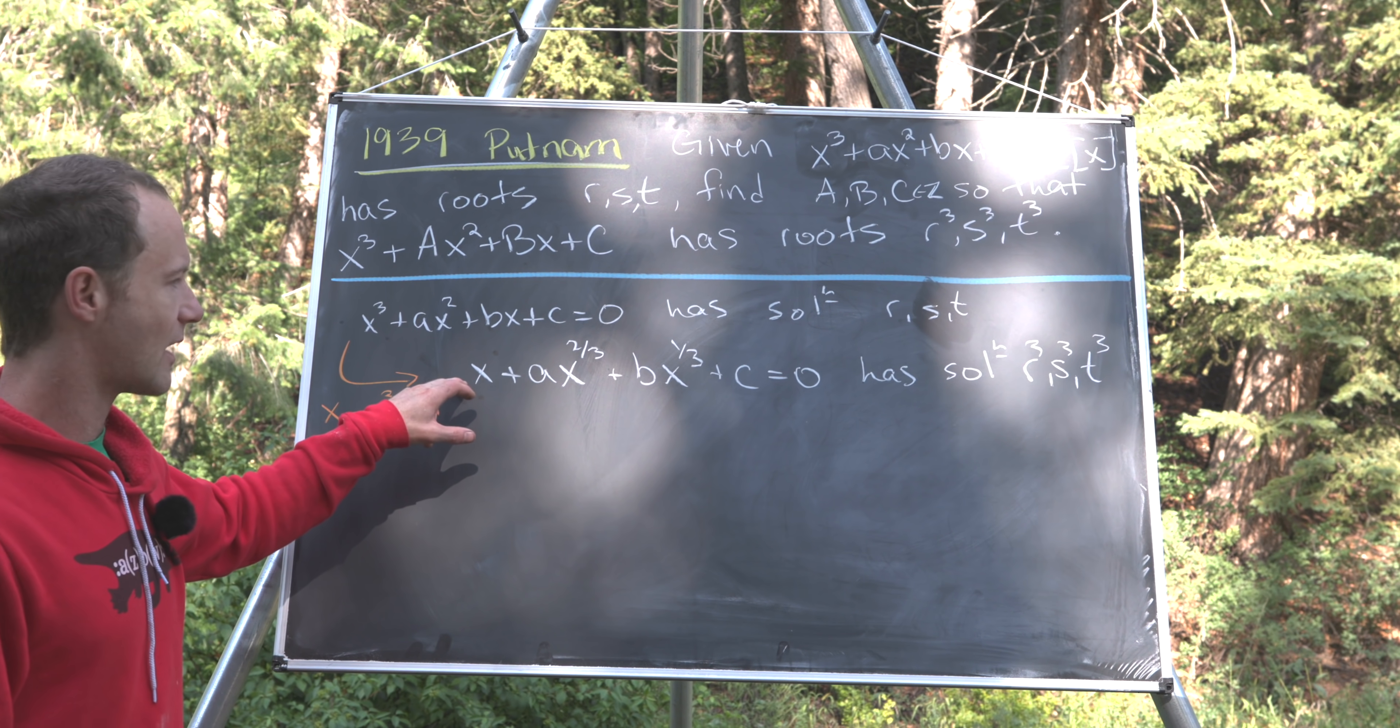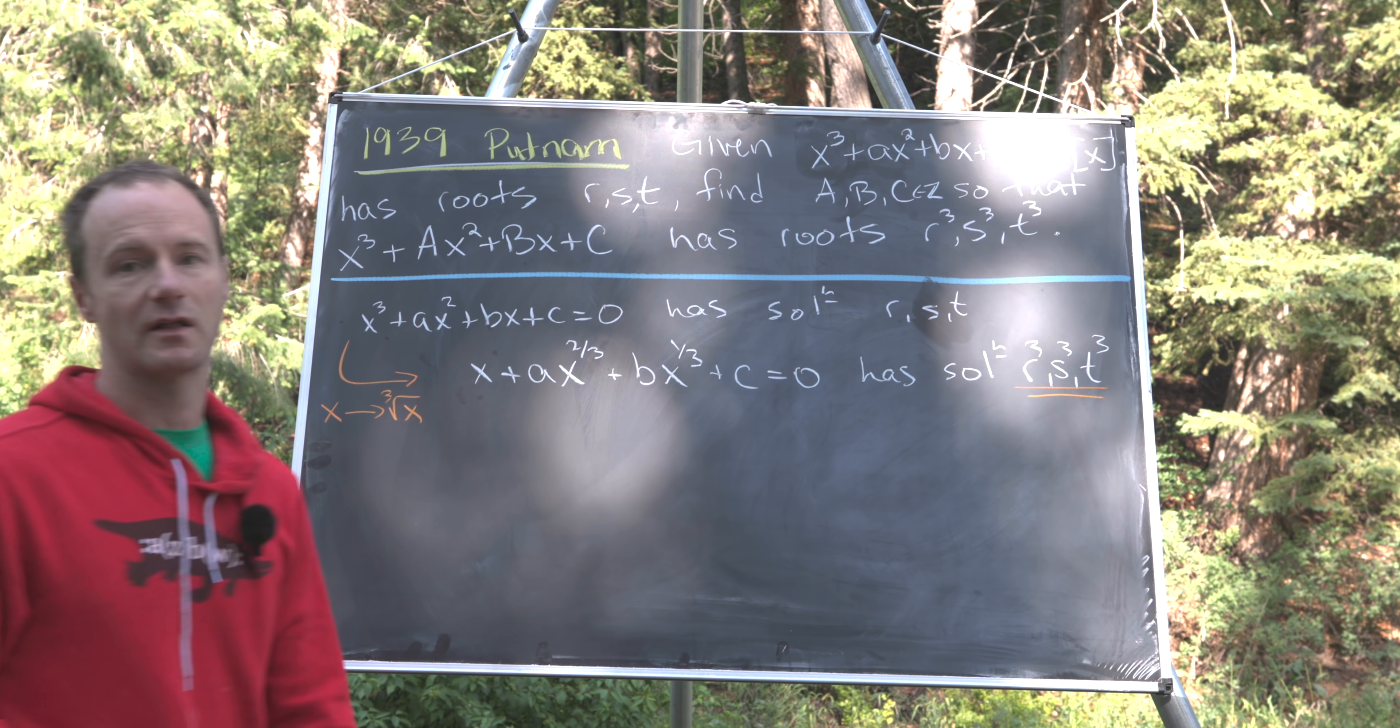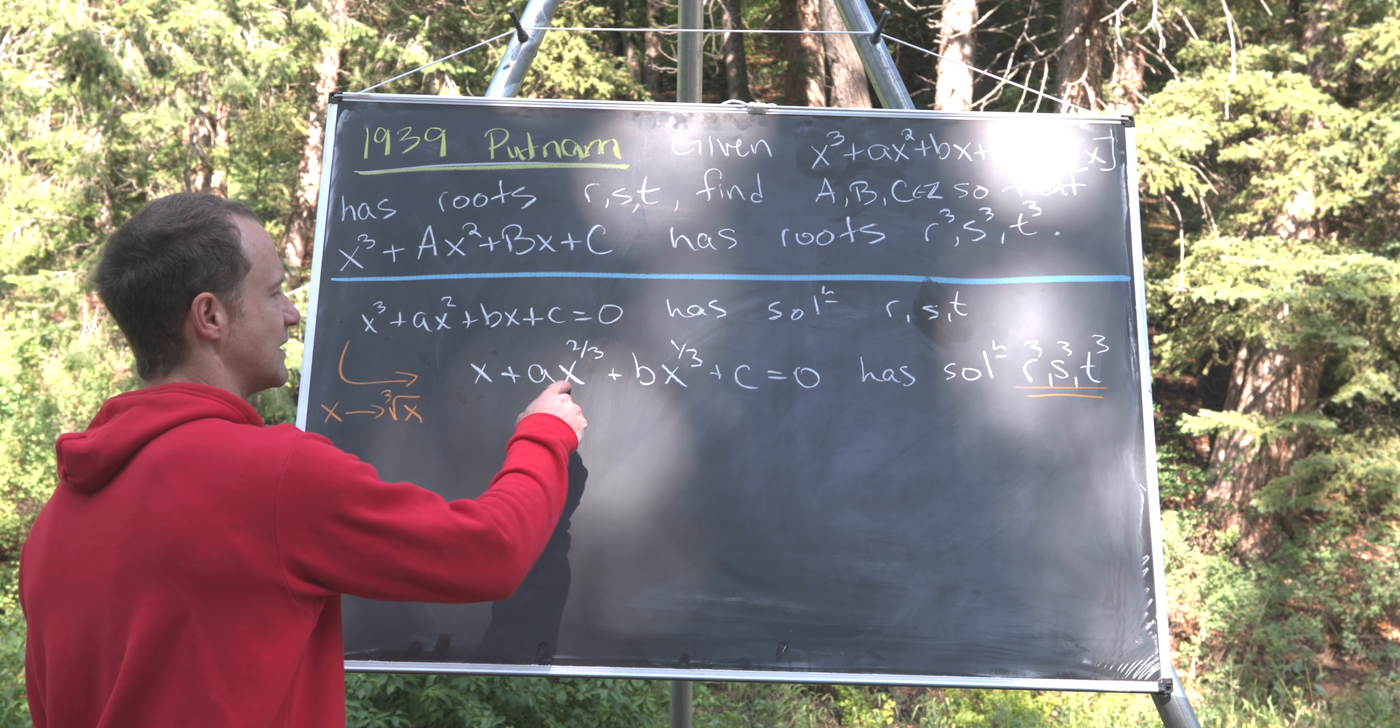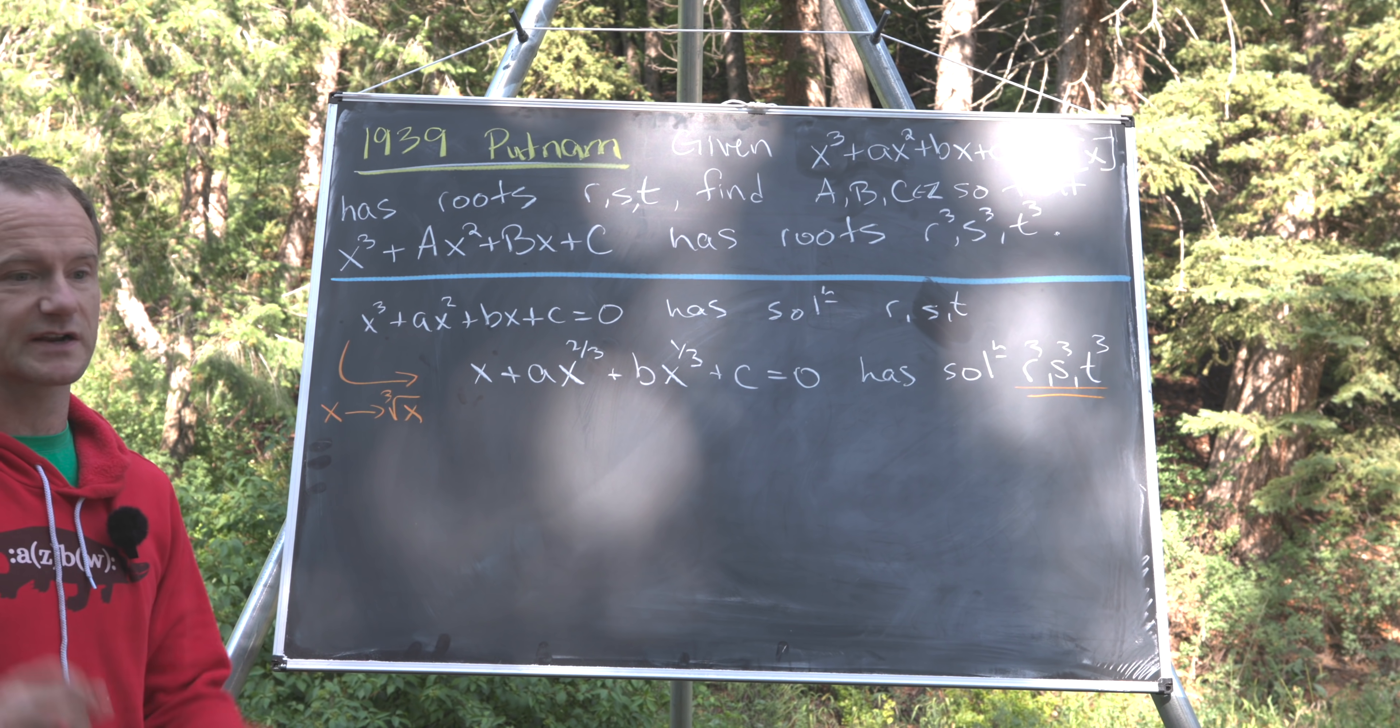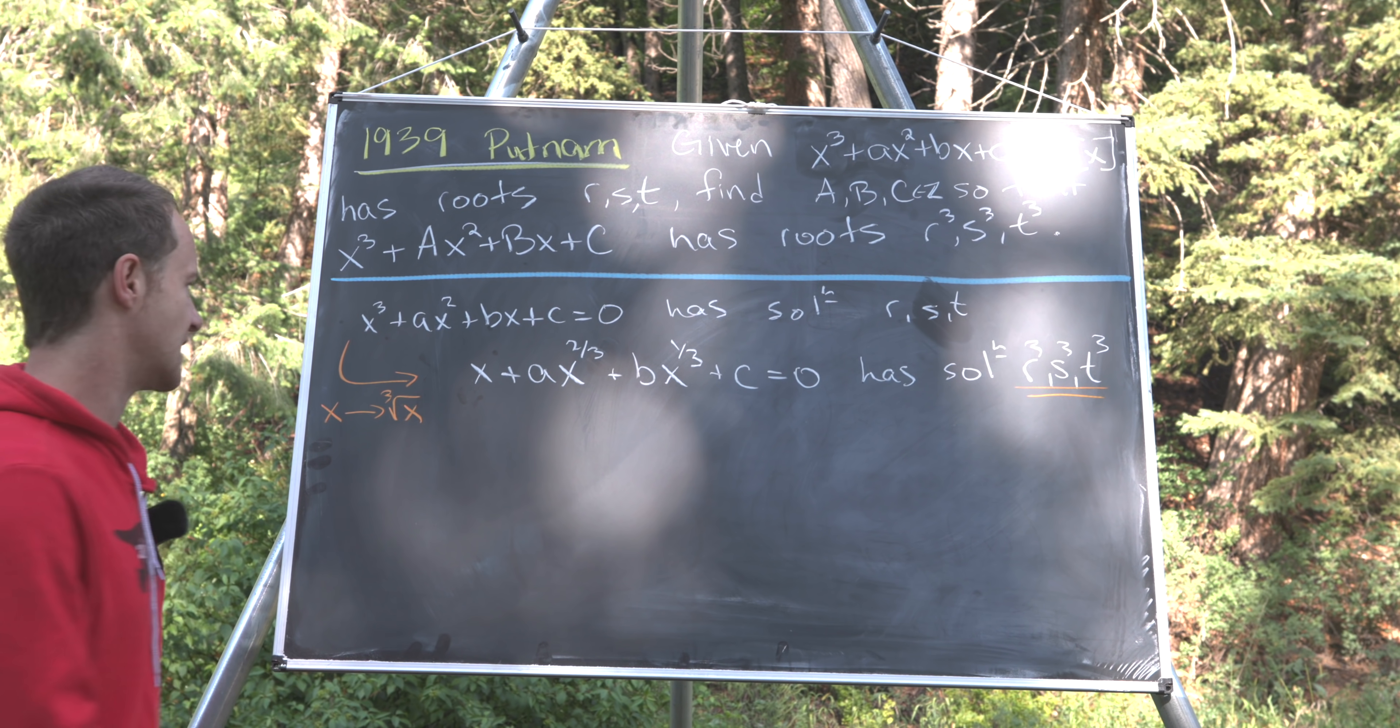But we've got a problem here. This is no longer a polynomial equation. It does have the correct roots, but it's not a polynomial equation. So what we need to do is manipulate this until it's a polynomial equation. Well obviously we could start cubing things to get rid of these cube roots, but we should take advantage of the fact that x and c are already in the correct form. In other words, they are polynomial type objects.